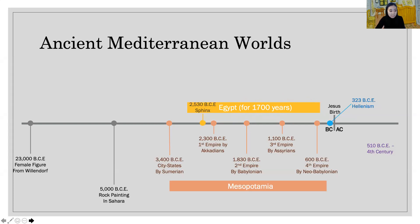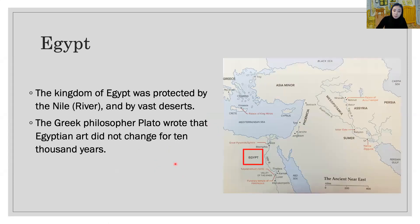The kingdom of Egypt was protected by rocky and navigable stretches of the Nile River and to the east and west by vast desert. Egypt, during much of its long history, was spared the waves of immigration and invasions that continuously transformed Mesopotamia. The Greek philosopher Plato wrote that Egyptian art did not change for 10,000 years. Thanks to the natural boundaries, they could keep one empire, but there was no artistic diversity.